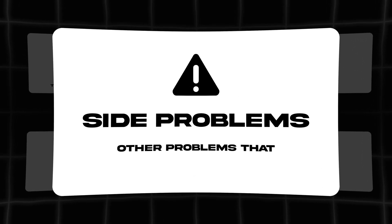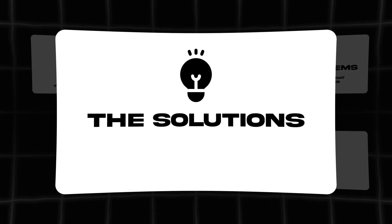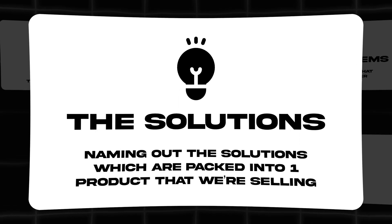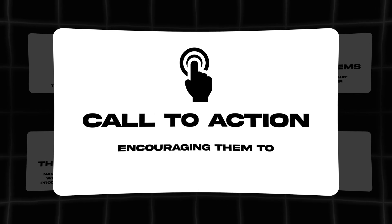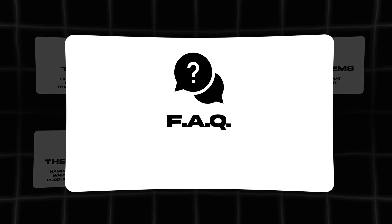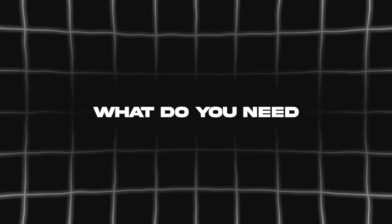After the big promise, you talk about all the side problems related to the main problem — really emphasize all the problems people encounter to create empathy with viewers. Then you start talking about all the different solutions to those smaller problems, and magically all those solutions are packed into the one product you're selling. After introducing the product, you unload all the calls to action — remind users to click the link below, buy now, order now, go to the next page. Finally, include the most frequently asked questions, because if they're still watching at that point, they're not yet convinced, and answering FAQs increases your chances of conversion.